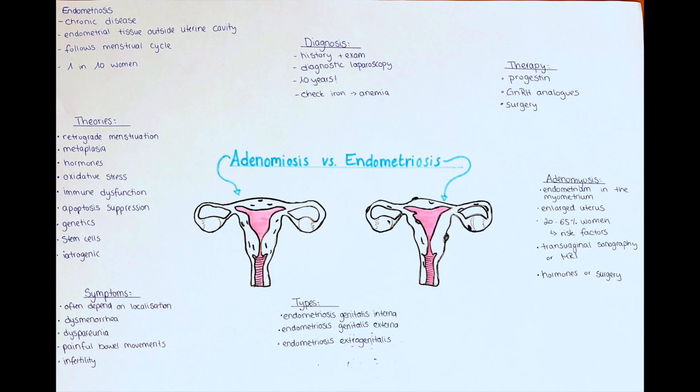It is thought that adenomyosis is frequently undiagnosed for many years, and research suggests that as many as 20 to 65 percent of women may be affected, depending on the age groups considered. Adenomyosis can occur in adolescents and nulliparous women — so women who have never had children — but it occurs most frequently in women between the ages of 35 and 50 who have had at least one pregnancy.